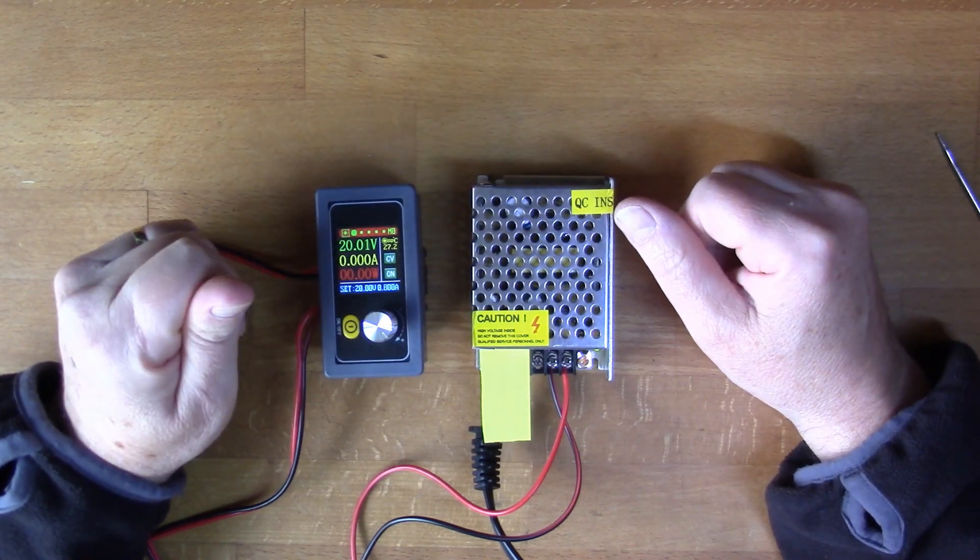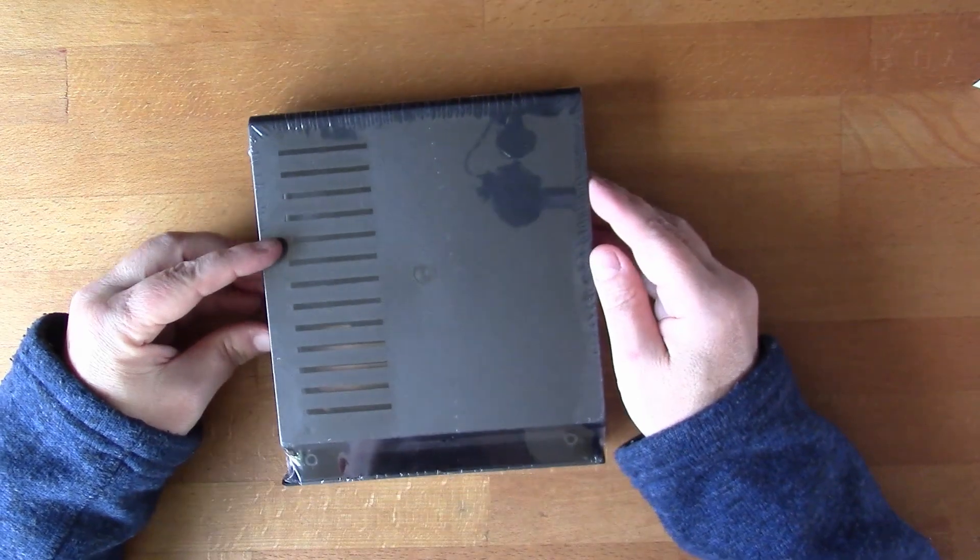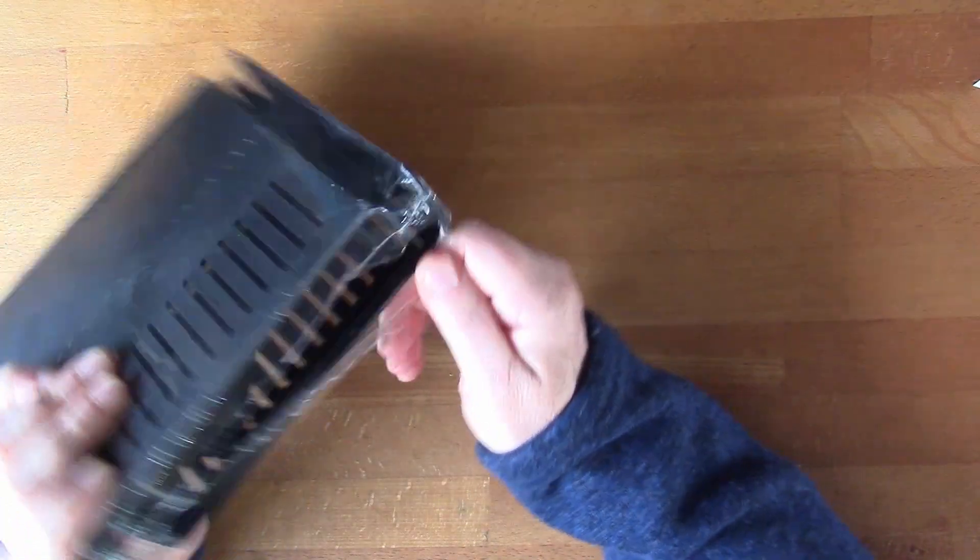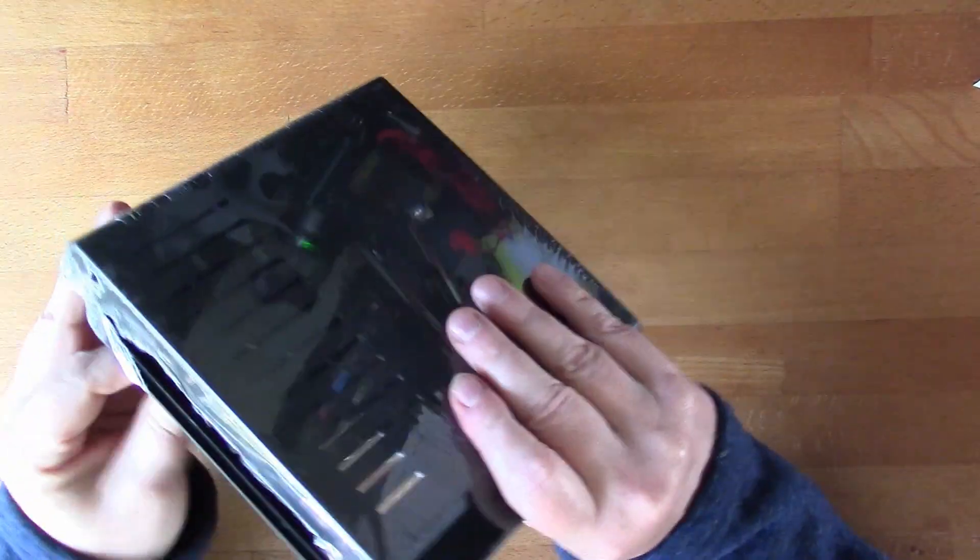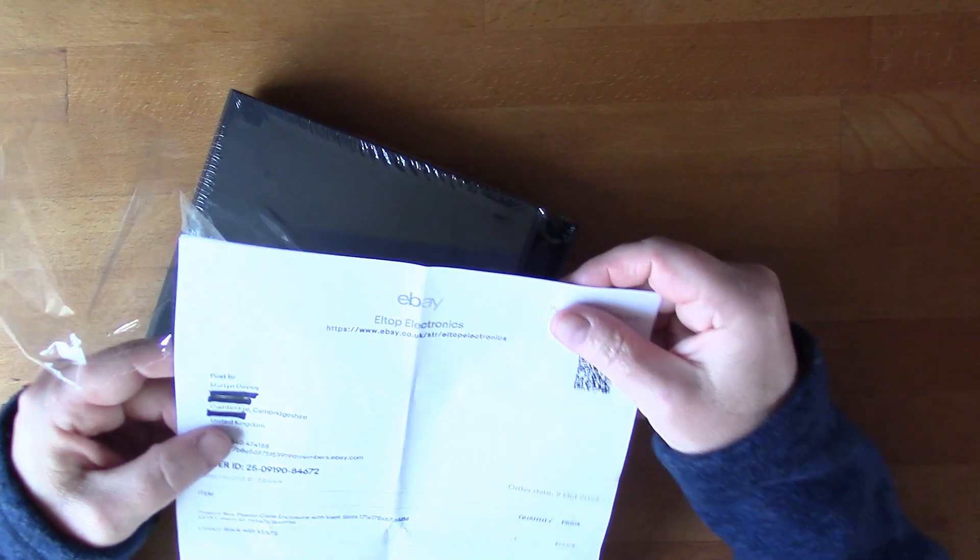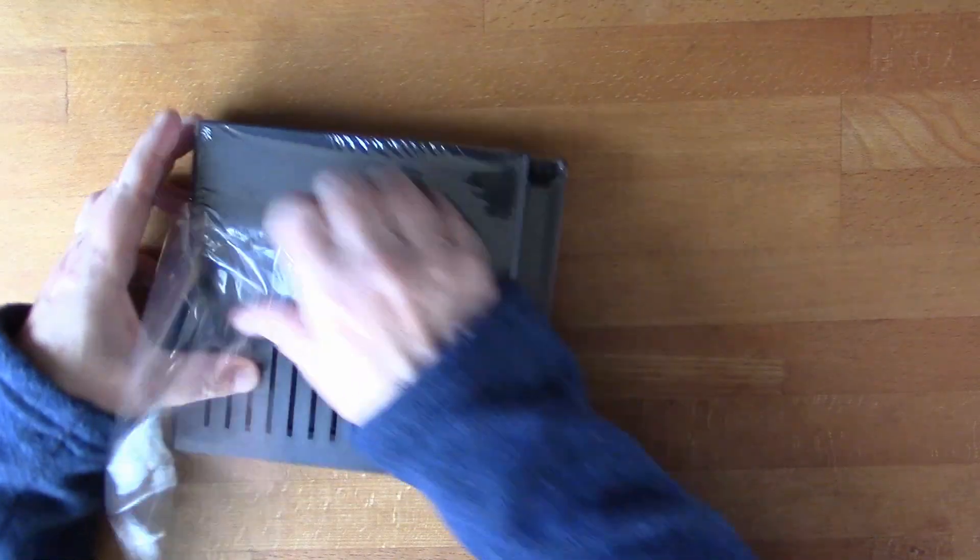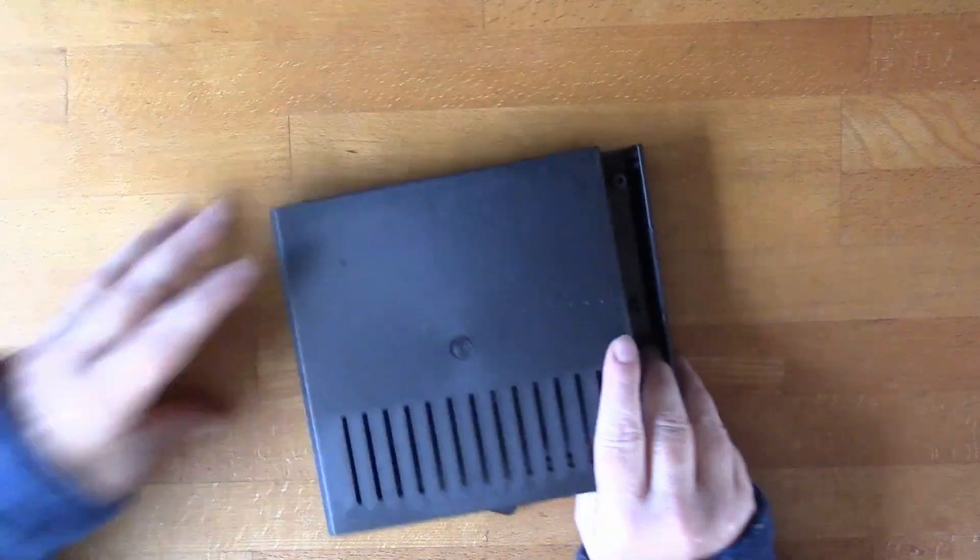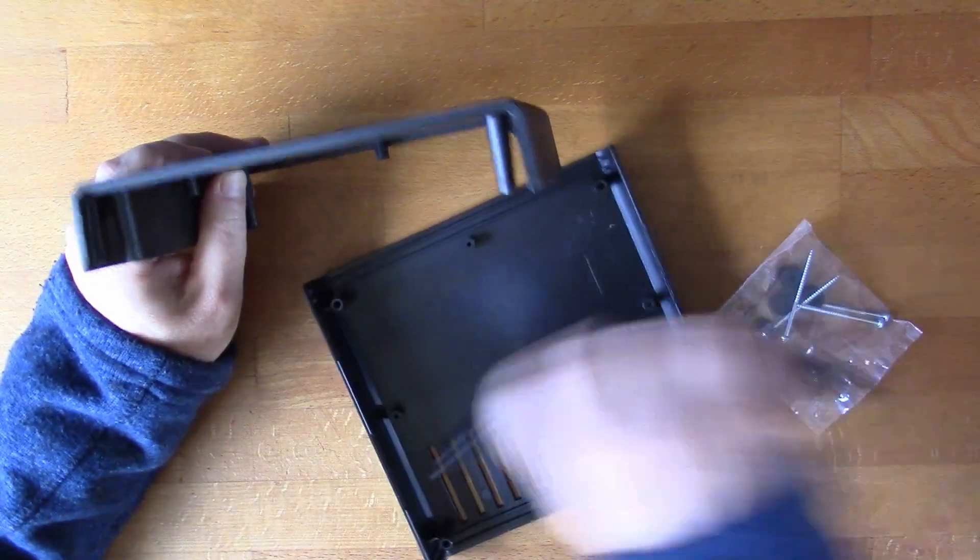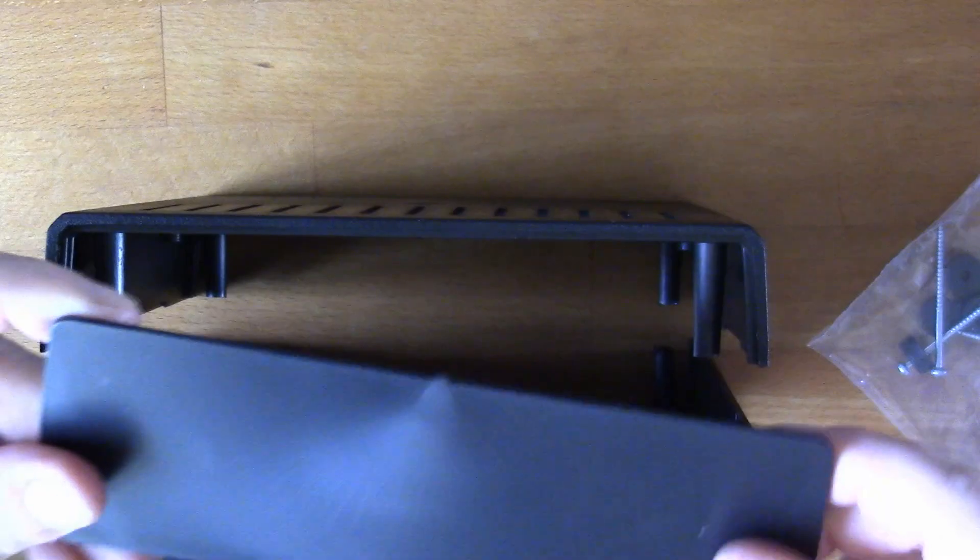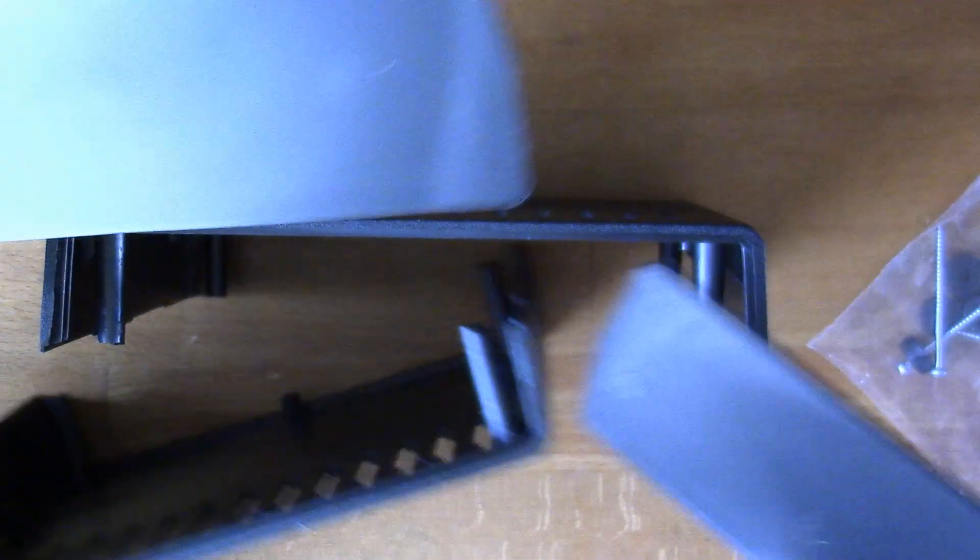So I've actually found an enclosure since I recorded those bits of video. Let's have a look. This is from a UK company on eBay, Altop Electronics, cost 12 pounds. You see it's got two pieces like so, there's a front panel and a back panel.